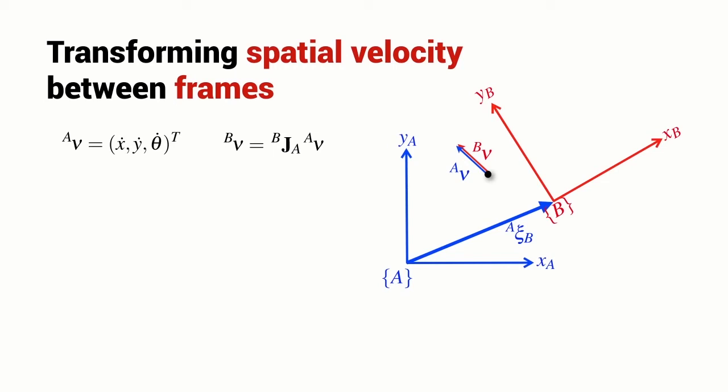Now, the velocity of the point with respect to frame B is related to the velocity with respect to frame A, and it's related by a Jacobian matrix, a Jacobian that maps velocity from one frame to another.